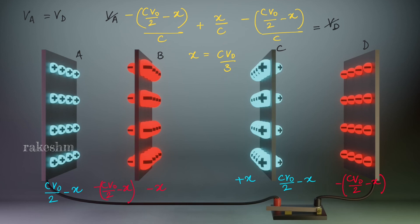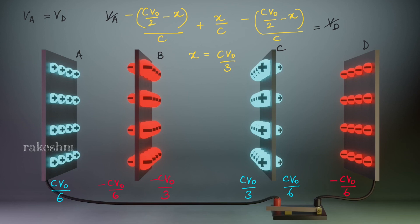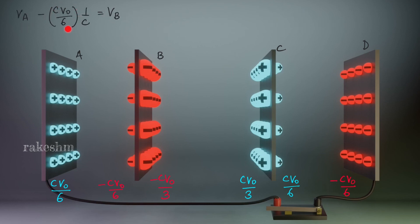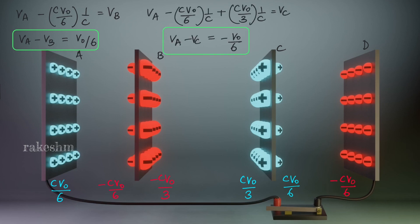So the final charge distribution on the plates is: CV0/6 on this side, minus CV0/6, CV0/3, plus CV0/3, CV0/6, and minus CV0/6 on this side. Now calculating potential differences: VA minus VB equals V0/6. Similarly, VA minus VC equals minus V0/6. And finally, VB minus VD equals minus V0/6. I hope you have understood this question from electrostatics. I will leave here and let us again meet in the next video.